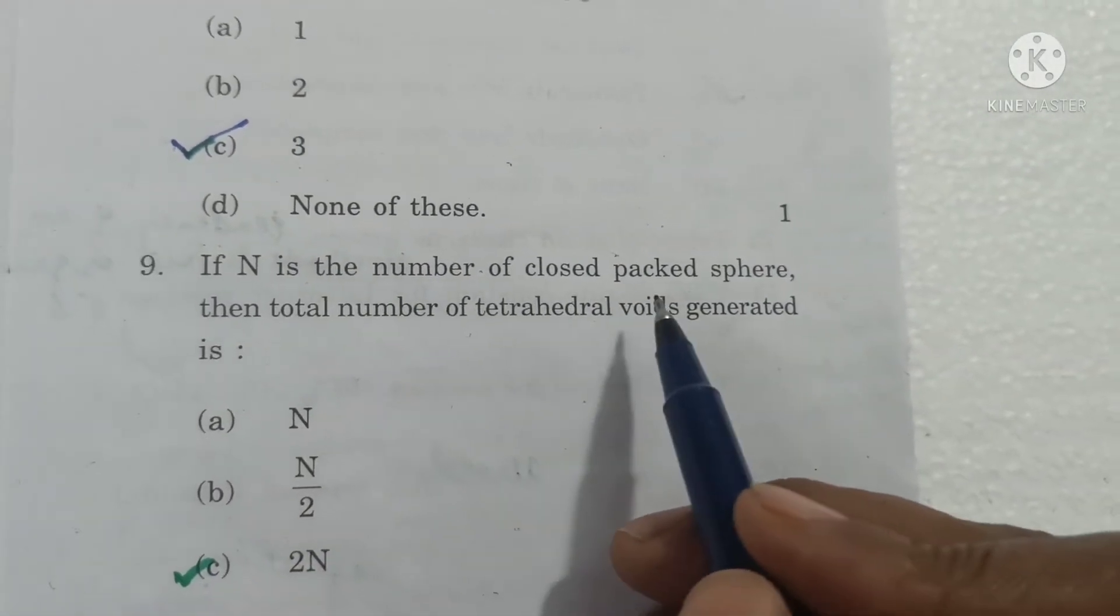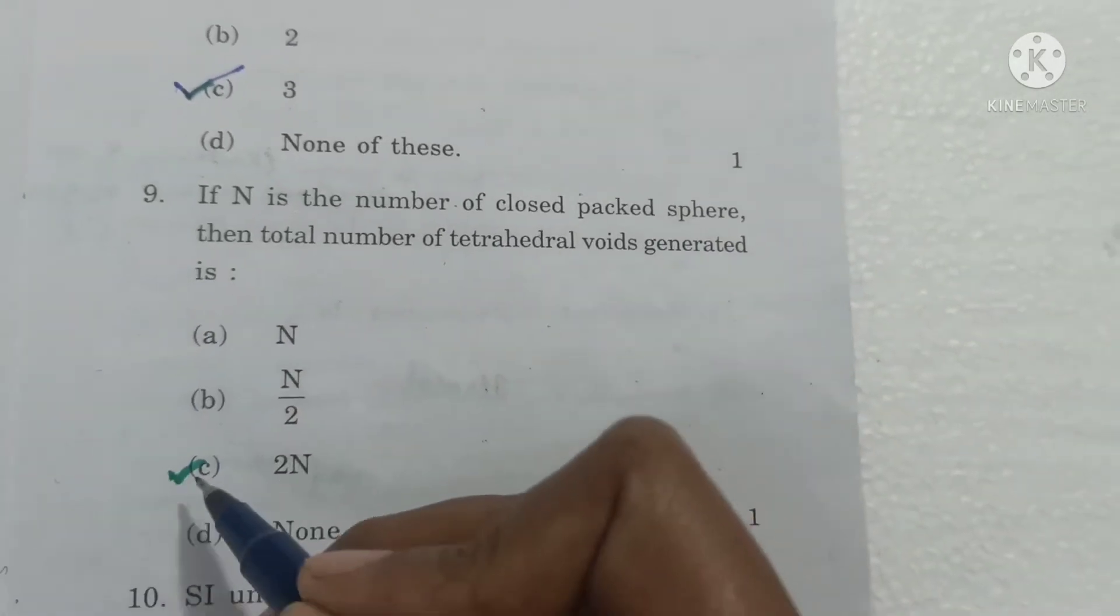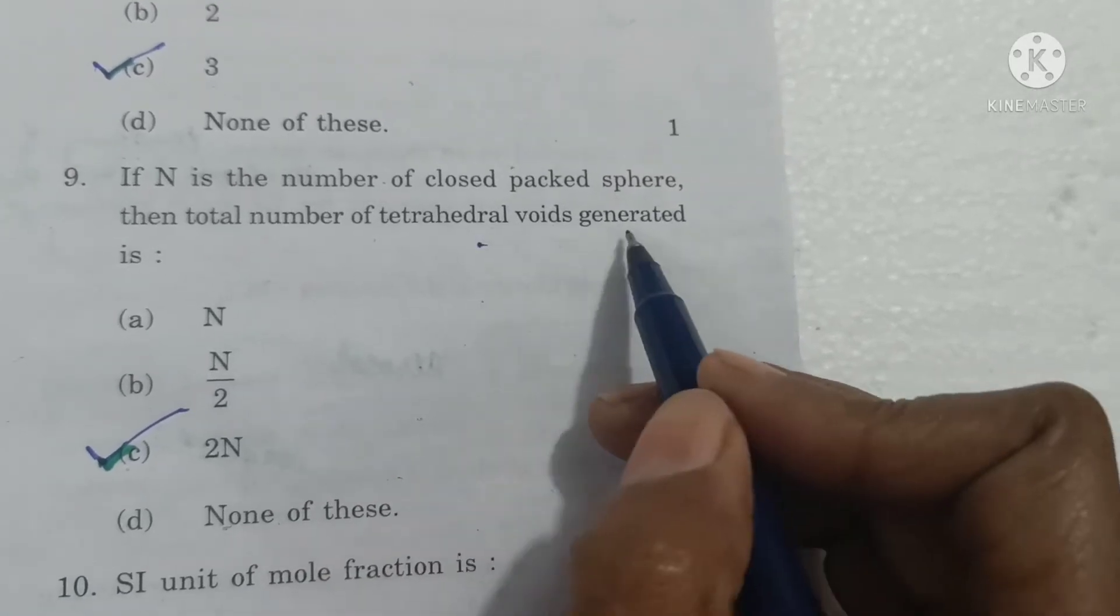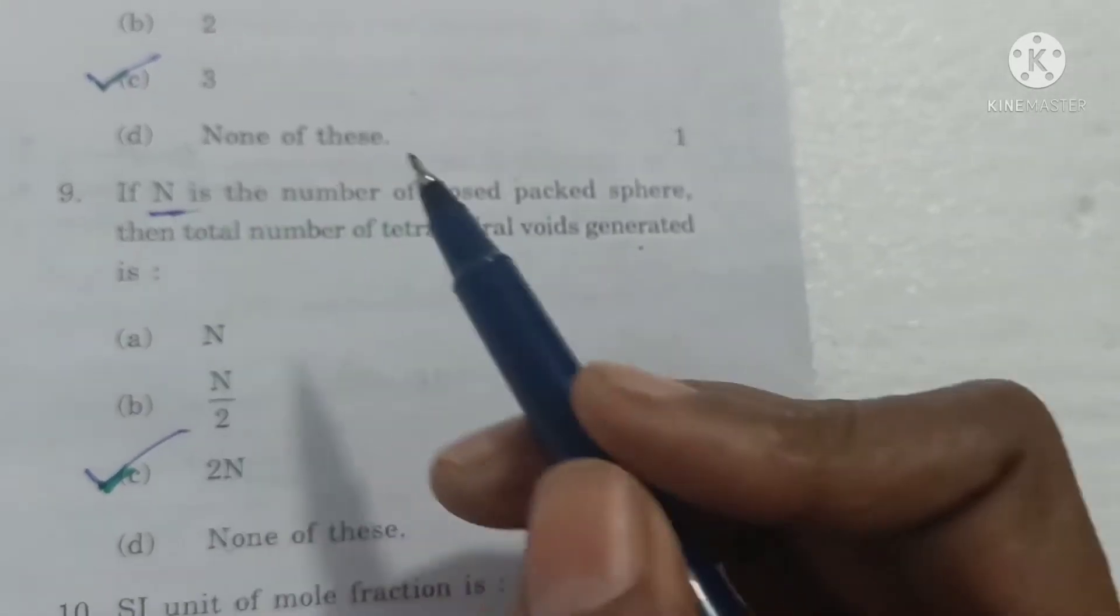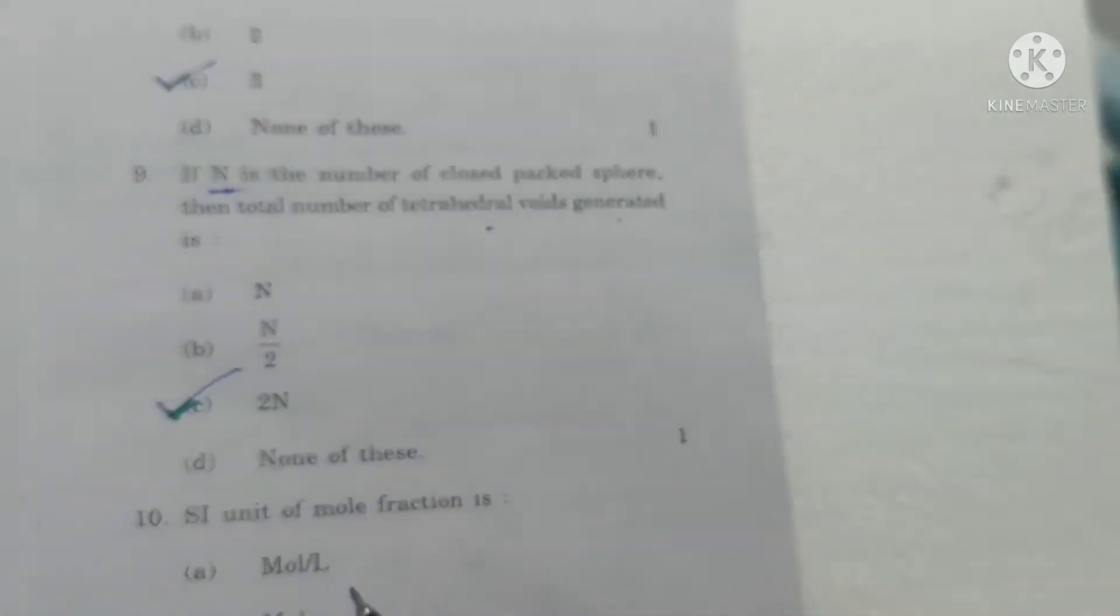If N is the number of closed packed spheres then total number of tetrahedral voids will be 2N. The number of tetrahedral voids is double the number of spheres whereas octahedral voids is same as the number of spheres.